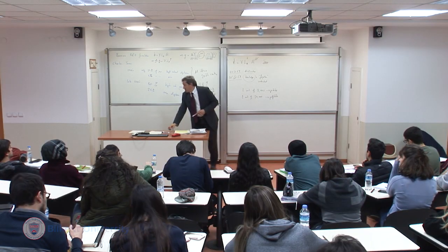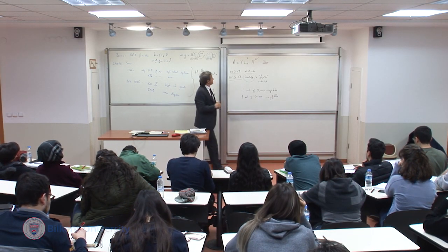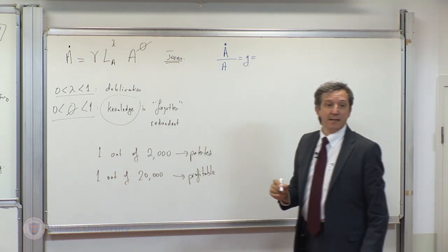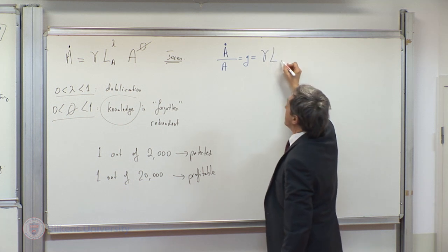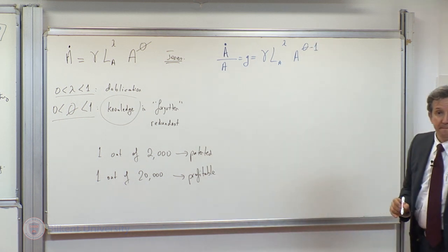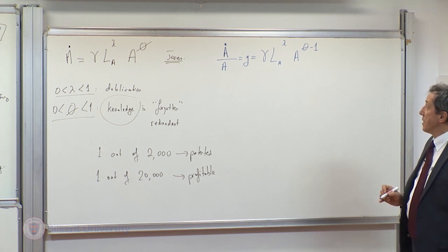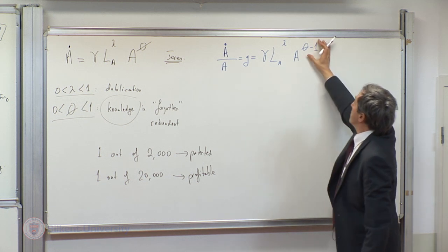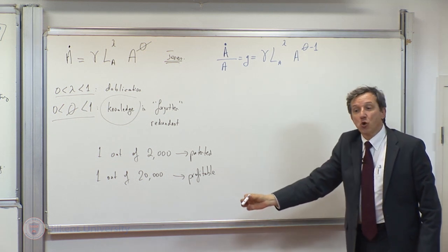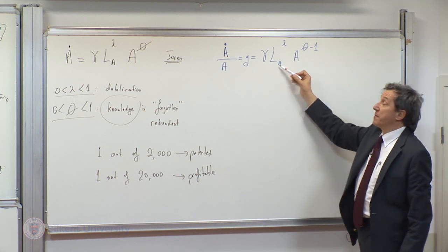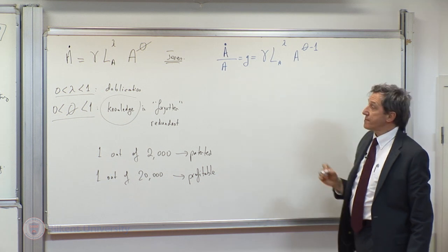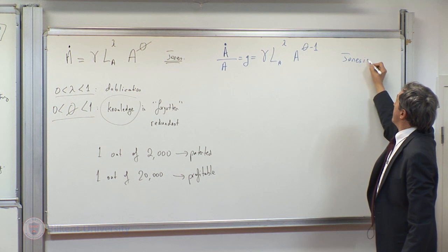Now, if you convert this to a similar growth rate form, like in Romer, observe that A dot over A, which the growth rate of the Jonesian world, is, again, gamma L_A lambda, A to the power phi minus 1. Observe that the more research, phi is less than 1. Therefore, this is, the more research you produce, the less will be its new contribution to rate of growth. The more population you have, the less will be its contribution on new rate of growth.